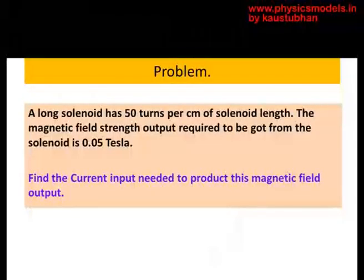Let's look at a typical numerical to get a feel of the numbers. So here is a coil that's 50 turns per centimeter of solenoid length. The person needs an output of 0.05 Tesla out of this solenoid. And the question is how much current do we have to input into this solenoid?